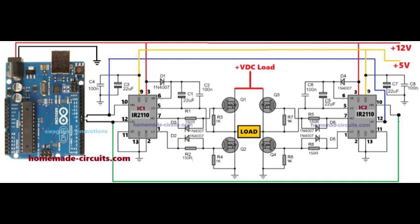IC1 drives MOSFETs Q1 and Q2. IC2 drives MOSFETs Q3 and Q4. Bootstrap capacitors 22 microfarads C2 and C5 are used for high-side MOSFET switching.